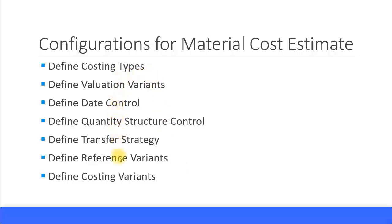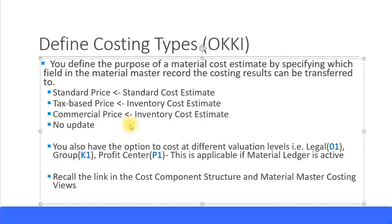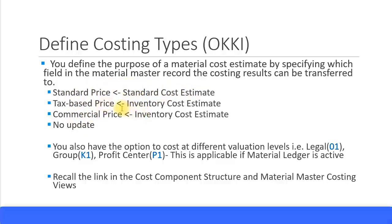The first step is to define the costing types. You define the purpose of a material cost estimate by specifying which field in the material master record the costing results should be transferred to. In the material master record, in costing view one and costing view two, there is a standard price, a tax-based price, and a commercial price. The costing type determines which of these fields the material cost estimate updates to.